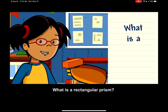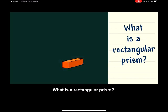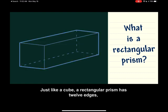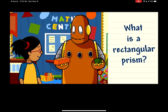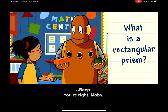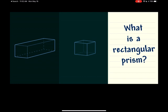What is a rectangular prism? Just like a cube, a rectangular prism has 12 edges. You're right, Moby. These solid shapes both have six faces.